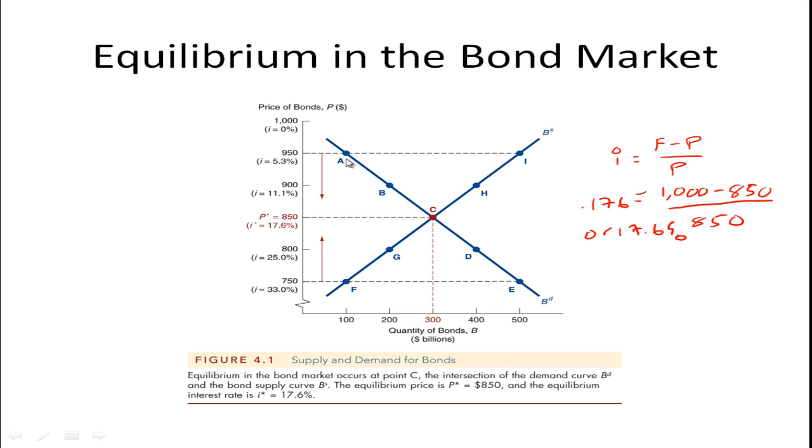As interest rates go up, or easier to think of price, as price goes down, demand goes up. Higher demand at lower prices. That's always the case. When you're buying goods, you always demand more when the price is lower. The supply curve slopes upward because at higher prices, suppliers of bonds are willing to supply more of them.